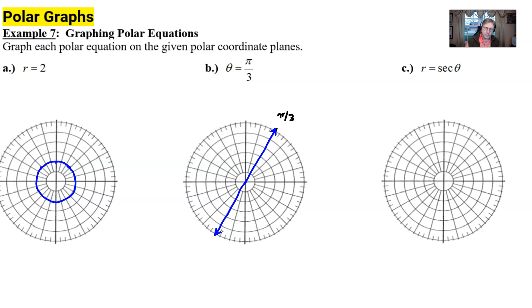For part C, we could graph this on a graphing calculator. In fact, I kind of did that a moment ago when we worked through example 6. But when you think about this, the key is to recall that secant is 1 over cosine of theta.